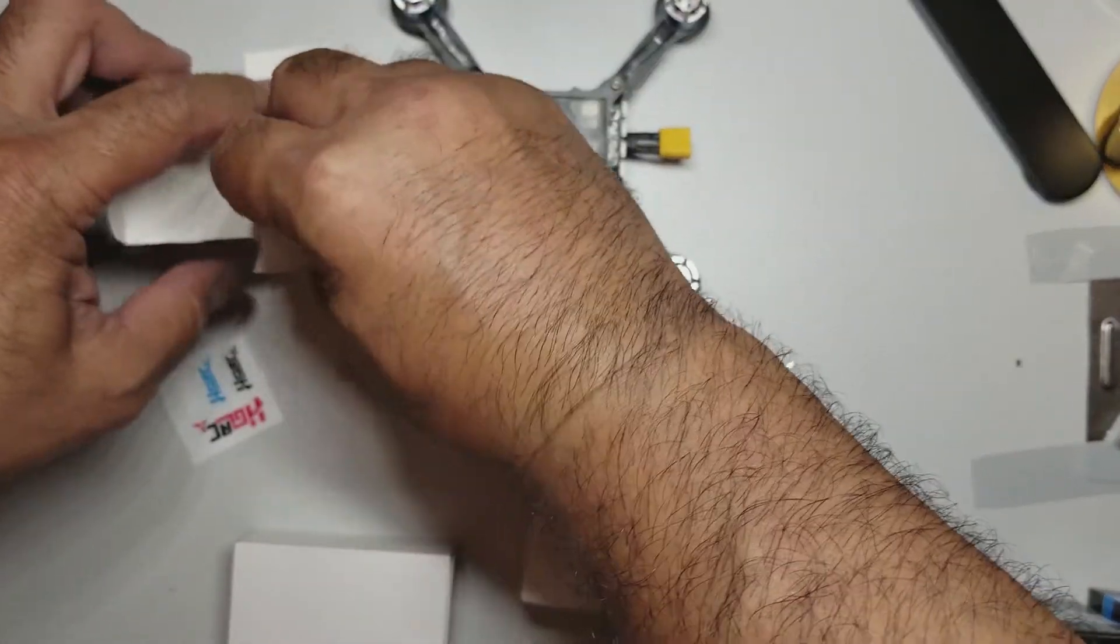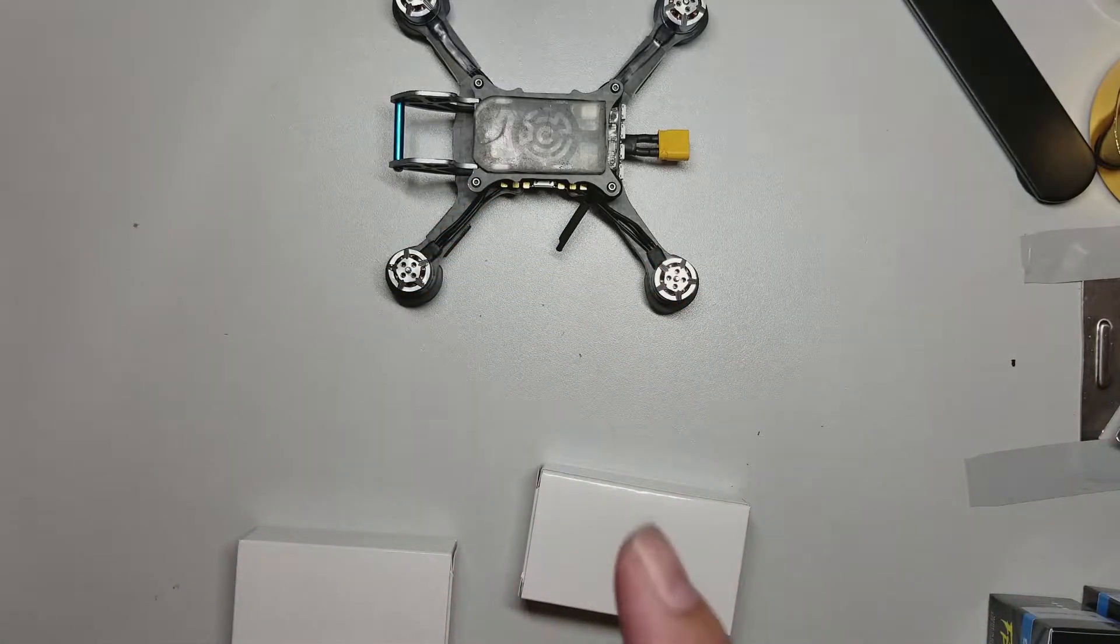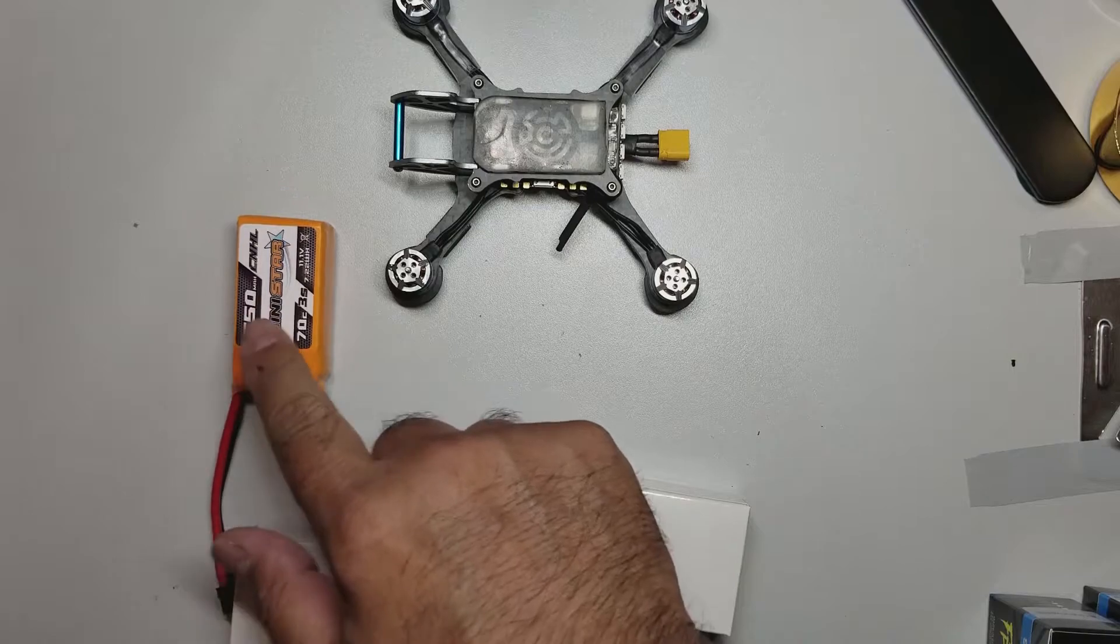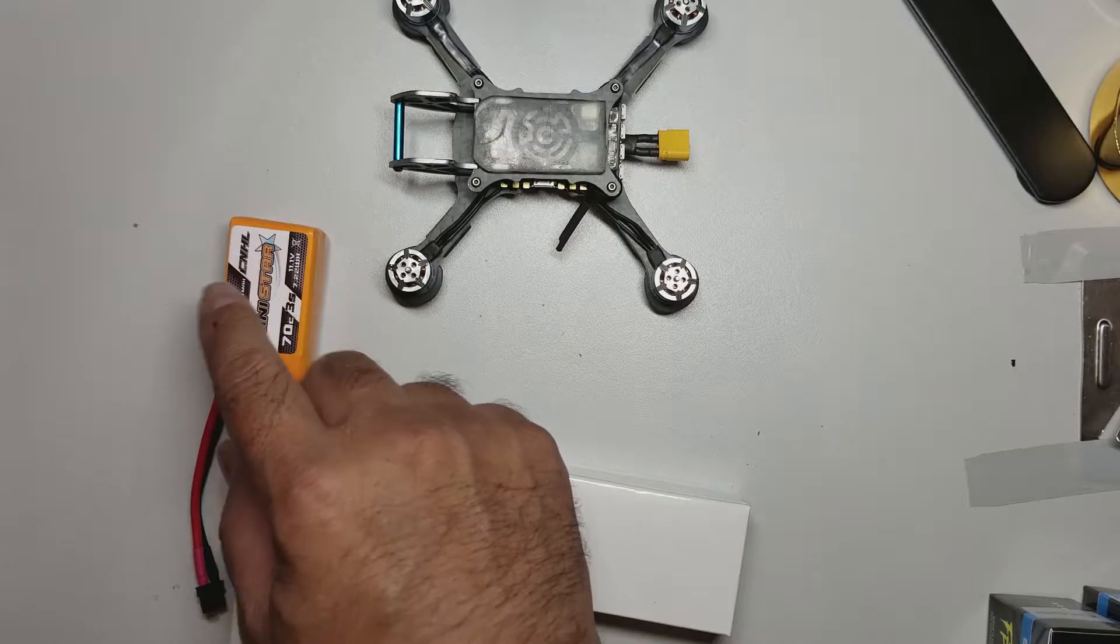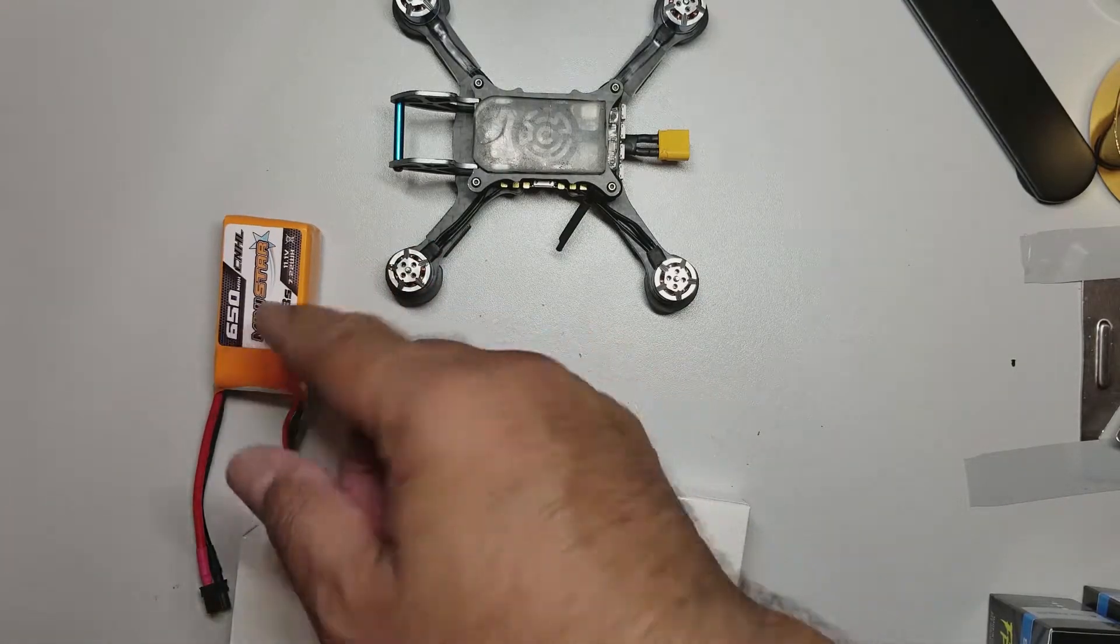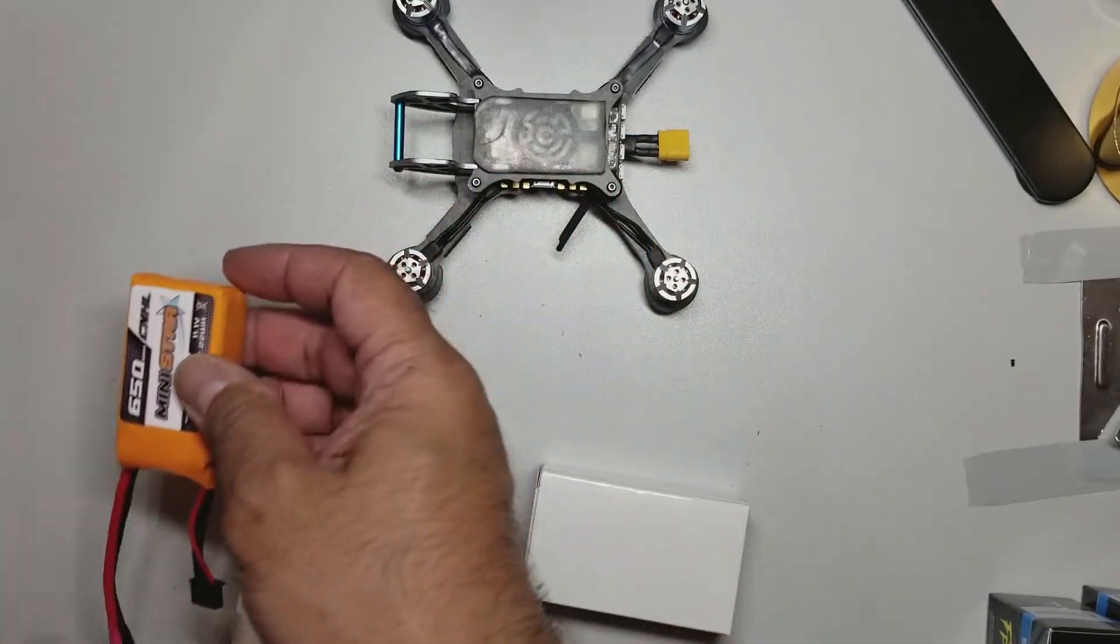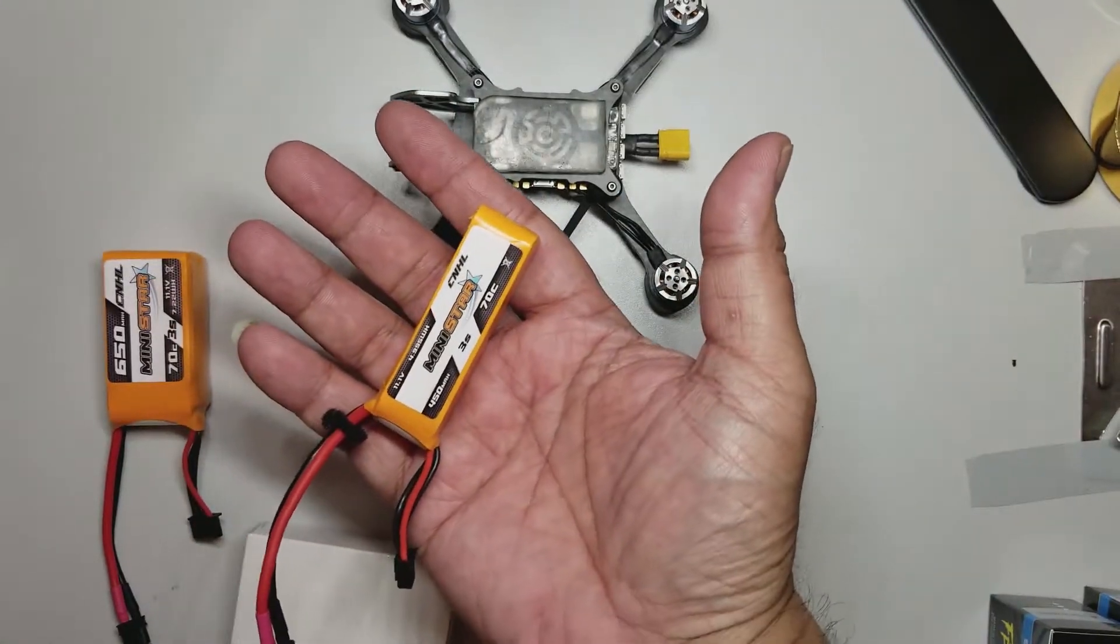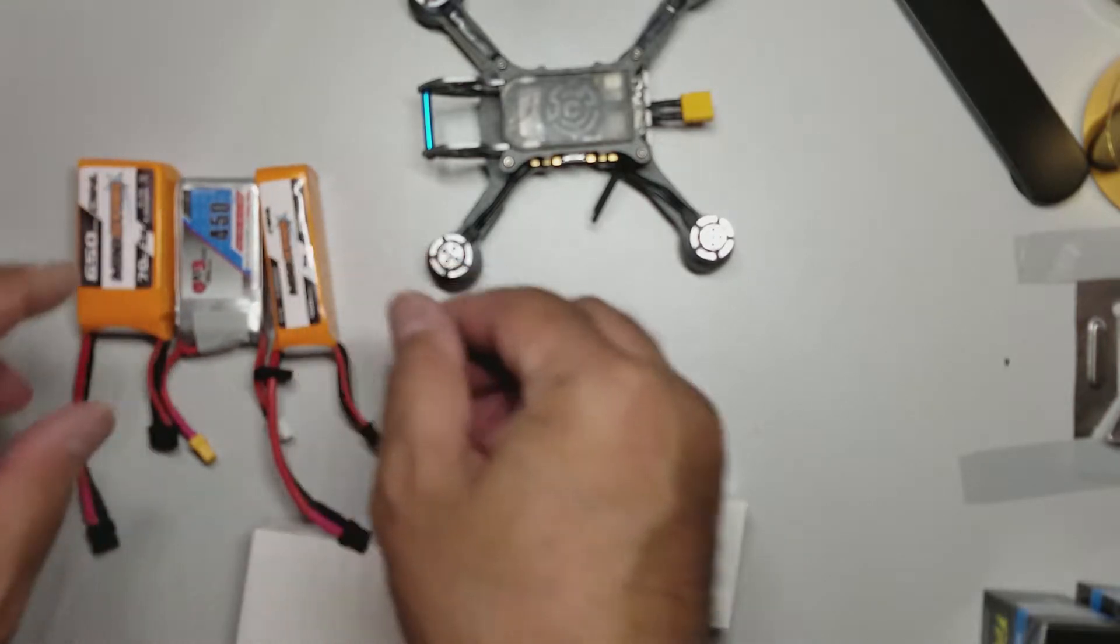There's some other things here that I ordered for the Nemesis specifically. Batteries. I ordered these previously because Blair suggested from BRDM Quads, he suggested a 650mAh 3S. So I saw these on Race Day Quads and they look great, but they turn out to be huge. I mean, look at the size of this thing.